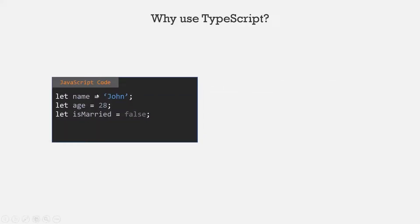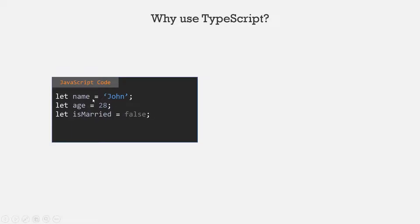Here we have a JavaScript code where we are declaring three variables. We have not explicitly specified the data type of these variables. The data type will be determined based on what type of value we are storing in it. So when we store a string value in the name variable, its data type will be string. When we store the number 28 in the age variable, its data type will be number. And when we store the boolean value false in the isMarried variable, its data type will be boolean. This is what dynamically typed means.